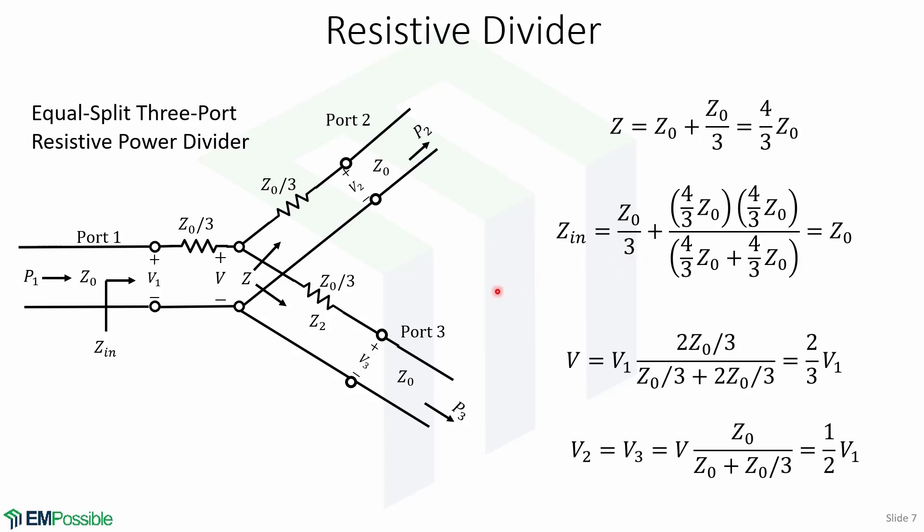Now we can define the voltage at port 1 to be V1. Then by voltage division, the voltage V, which is the voltage at the center of the junction, is given by this expression, and it's equal to 2 thirds of V1.